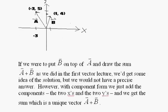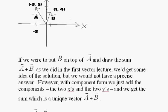If we were to put B on top of A and draw the sum A + B as we did in the first vector lecture, we'd get some idea of the solution, but we would not have a precise answer.